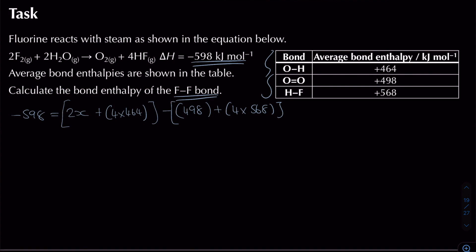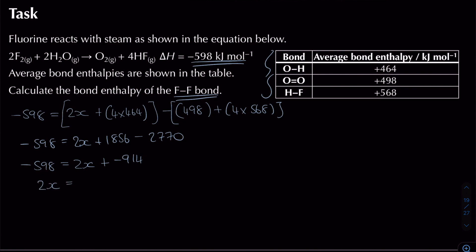Simplifying: −598 = 2x + (−914). Subtracting −914 from both sides gives 2x = 316, so x = 158 kJ/mol. Therefore, the bond enthalpy of the F–F bond is 158 kJ/mol.